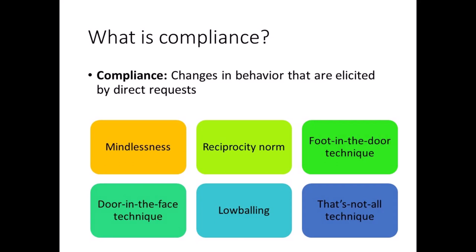These six techniques include mindlessness, the reciprocity norm, the foot-in-the-door technique, the door-in-the-face technique, low-balling, and the that's-not-all technique. The strategy that an influencer chooses will depend on their relationship with the target, their social status, personality and culture, as well as the nature of the request.